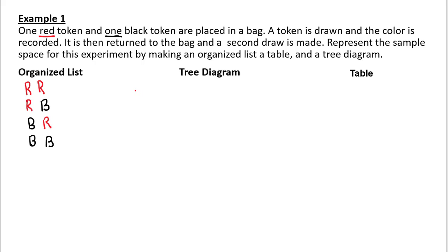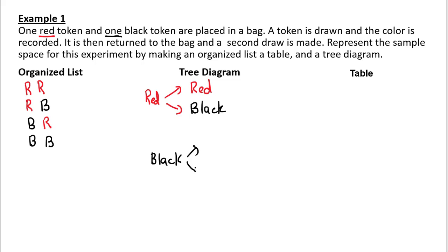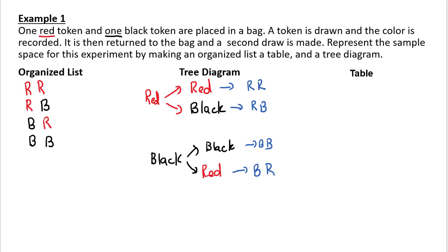For the tree diagram: red branches into red-red and red-black; black branches into black-black and black-red. The results are red-red, red-black, black-black, and black-red. For the table, you list your possible outcomes across the first row and down the first column — your two options being red or black for each draw.